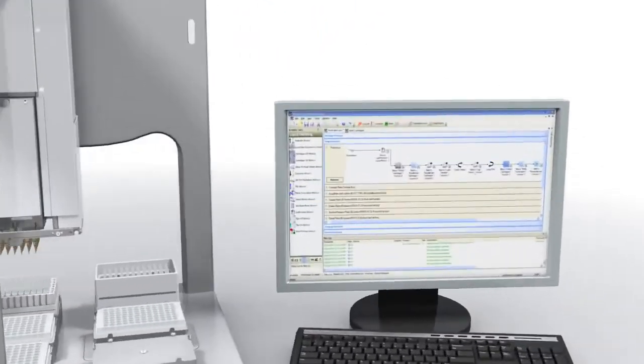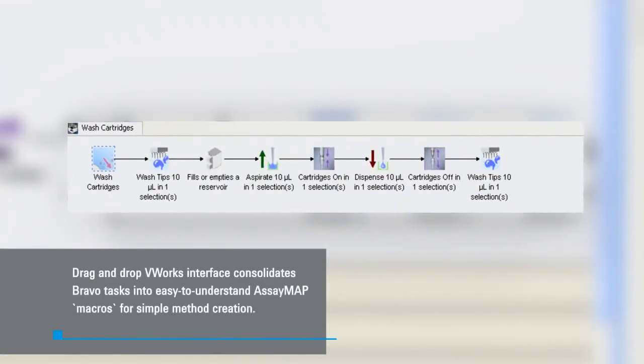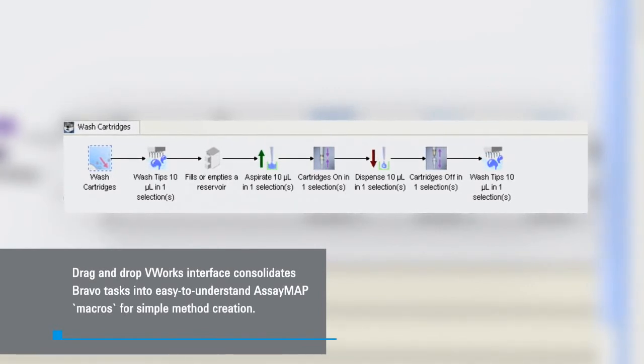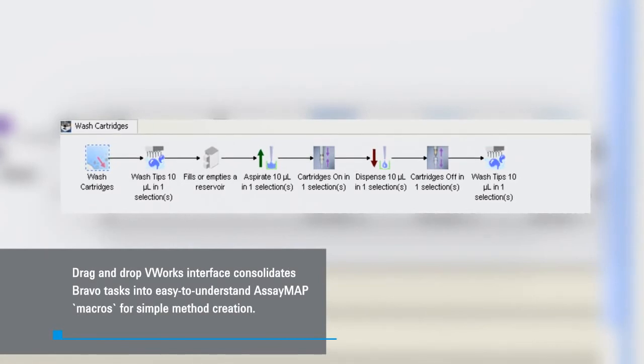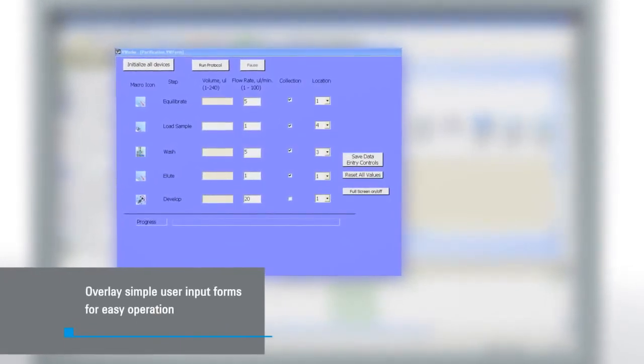The platform is controlled by the Agilent V-Works automation control software. The V-Works graphical user interface consolidates Bravo tasks into easy-to-understand AssayMap macros for simple method creation while allowing for application-specific adjustments to liquid handling parameters, such as flow rate and volume. With V-Works, you can create simple user input forms for easy operation.